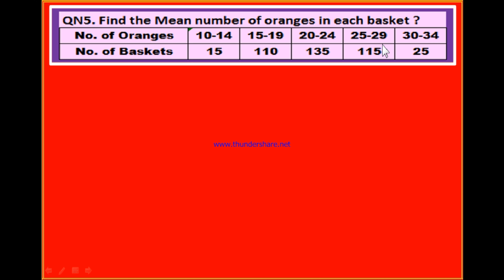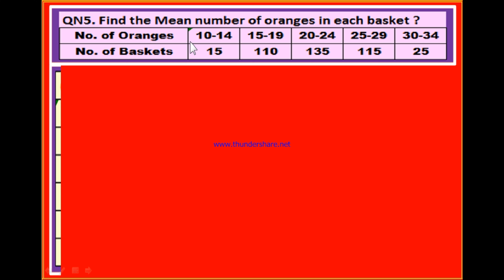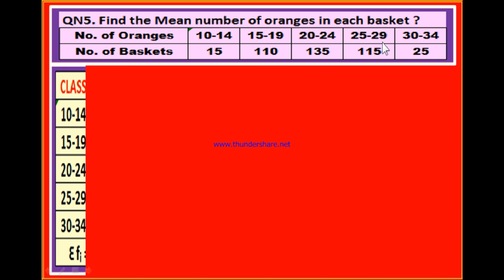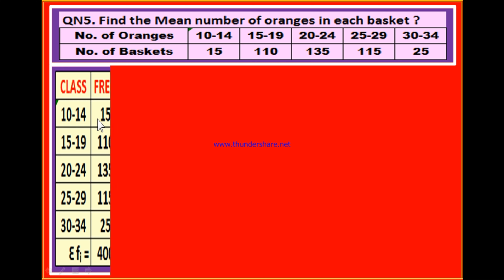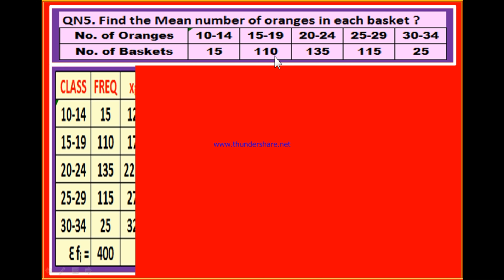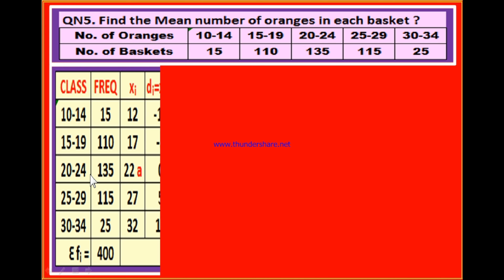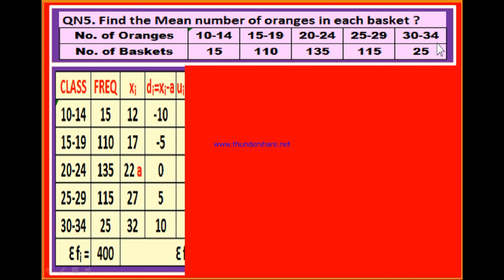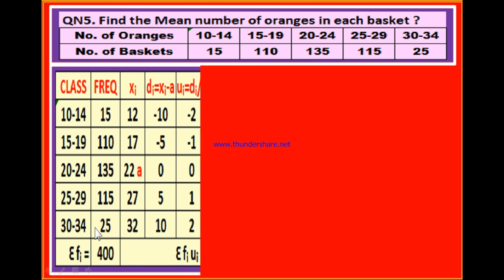Number of oranges can be considered as classes and the number of baskets as frequencies. The first column is for classes: 10–14, 15–19, 20–24, 25–29, 30–34. In the 10–14 class the frequency is 15; in 15–19 the frequency is 110; 20–24 the frequency is 135; 25–29 the frequency is 115; 30–34 the frequency is 25. These are the frequencies.